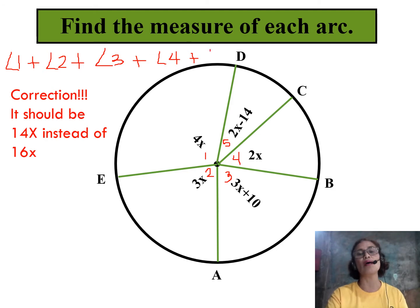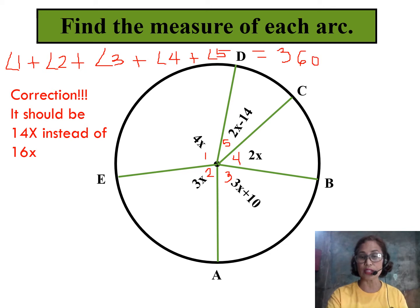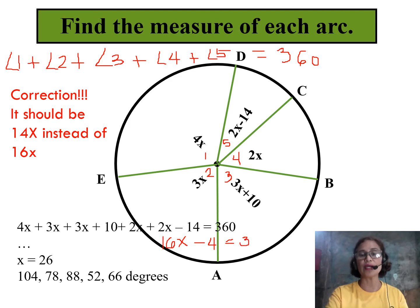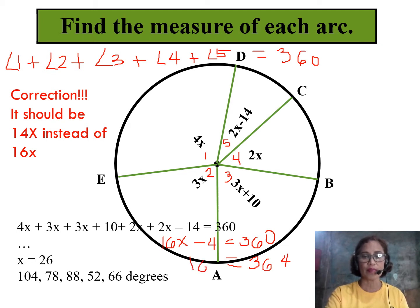How do we solve for the value of X? We substitute the expressions given for each angle. So: 4X plus 3X plus 3X plus 10 plus 2X plus 2X minus 14 equals 360. Combining all X terms gives 16X, and combining the constants — positive 10 and negative 4 — gives negative 4, so 16X minus 4 equals 360. Transposing gives 16X equals 364, and dividing both sides by 16, the value of X is 26.